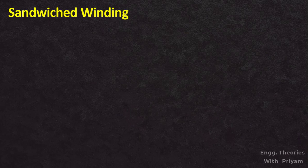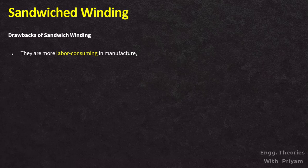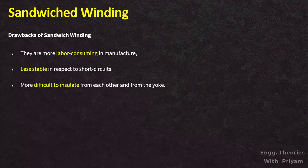Drawbacks of sandwich winding: in comparison to concentric winding, they have several drawbacks. They are more labor-consuming to manufacture, less stable with respect to short circuits, and more difficult to insulate from each other and from the yoke. This is the reason why core-type transformers with concentric windings are more common.